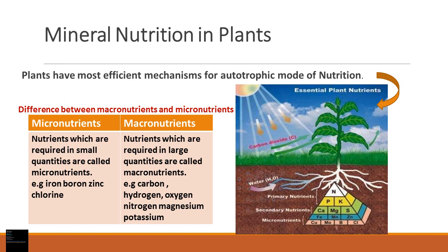Now we will do section 8.1: Mineral Nutrition in Plants. Plants have the most efficient mechanism for autotrophic nutrition, meaning they can make their own food through photosynthesis. During photosynthesis, plants require chlorophyll present inside the leaves, which helps absorb sunlight. They also require carbon, hydrogen, and oxygen. Carbon comes from carbon dioxide in the surrounding air, which enters through stomata into the leaves, and the plant fixes the carbon from CO₂.